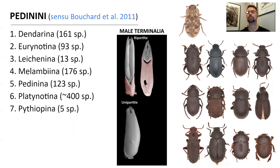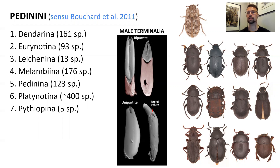For example, we had Dendarina, whose members have bipartite adegal tegmina with an elongated base, contrary to Pedinina, which also possess bipartite tegmina, however with short basal pieces. On the other hand, there was Melambina with unipartite tegmina. Sometimes the definitions were complicated by cases where it is hard to distinguish between the unipartite and bipartite options.